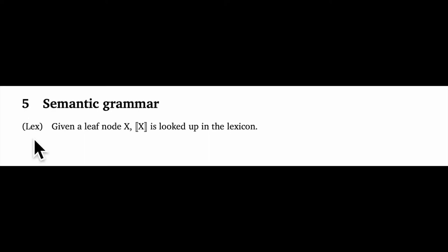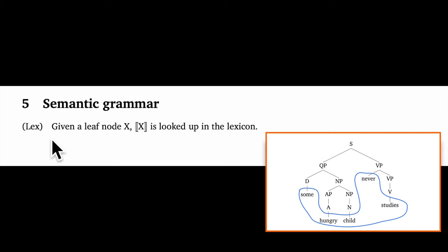Our most basic rule is lex for lexical. It just says that if you're at the leaf nodes in the tree, the ones with no children, then you get the meaning of the node by retrieving it directly from the semantic lexicon.